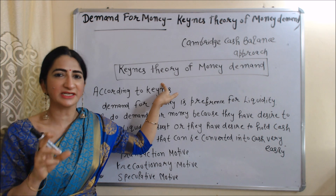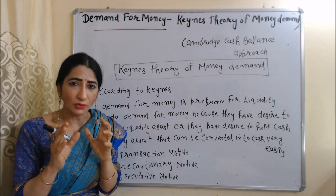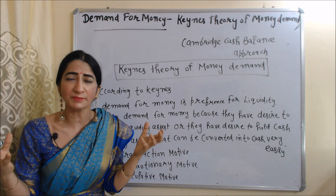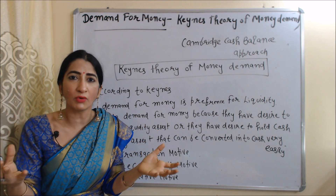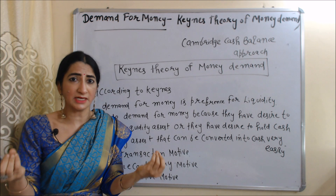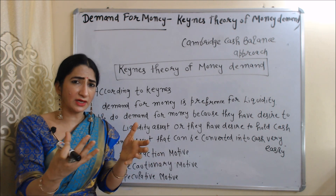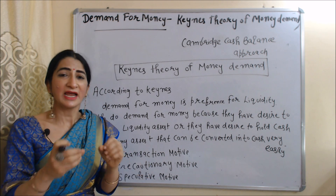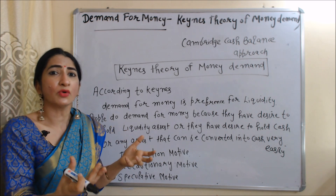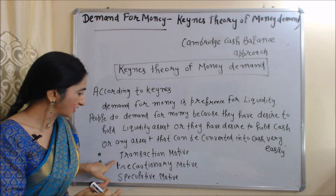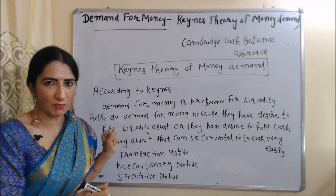First, we are going to talk about the Keynesian theory of money demand. According to this theory, money demand means preference for liquidity — people demand money because they have a desire to hold liquid assets or cash, or any asset which they can convert into cash very quickly. According to this theory, people hold cash mainly for three motives: transaction motive, precautionary motive, and speculative motive.